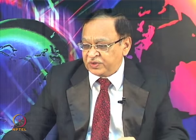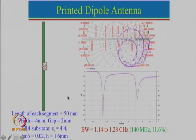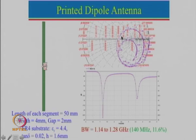From the dipole antenna we looked at the printed dipole antenna, where instead of using a circular diameter dipole antenna we used a flat strip dipole antenna. We looked at two different simulations: one was the strip in the air and then a printed dipole antenna on a dielectric substrate. We had left at the point where we had this printed dipole antenna printed on a very low cost FR4 substrate, and this is the Smith chart plot which I want to go through one more time.